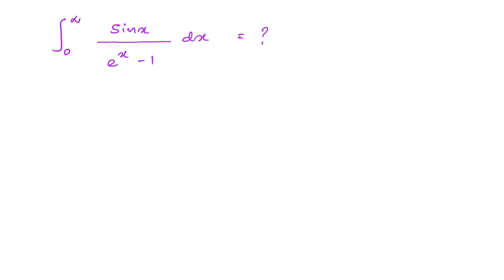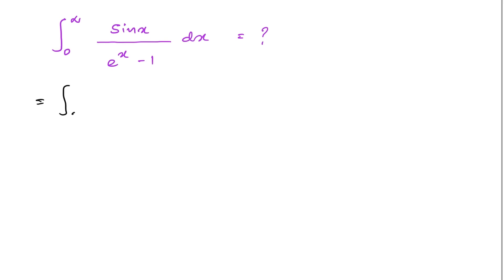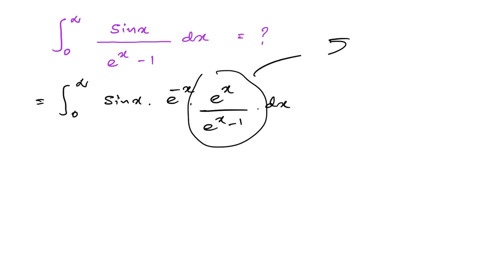First of all, as a first step, here we have 0 to infinity. In the numerator we have sin(x), so I am going to multiply by e^(-x). We should also multiply by e^x, so e^x and e^(-x) get cancelled, and we will have the same expression. Here in the denominator we have e^x minus 1 dx. Now, this one we know we can represent as a series representation.